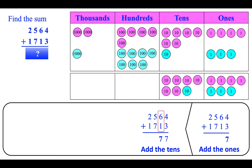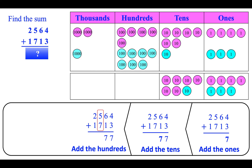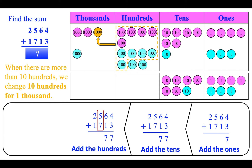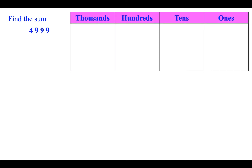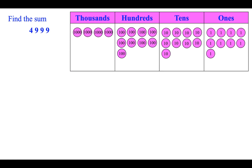Find the sum: two thousand five hundred sixty-four plus one thousand five hundred seventy-four. First add the ones: four plus three is seven. Next we add the tens: six plus one is seven. Then we add the hundreds: five plus seven is twelve. When there are more than ten hundreds, we change ten hundreds for one thousand — we add one thousand to the thousands place; now we are left with two. Then we add the thousands: one plus two plus one is four.